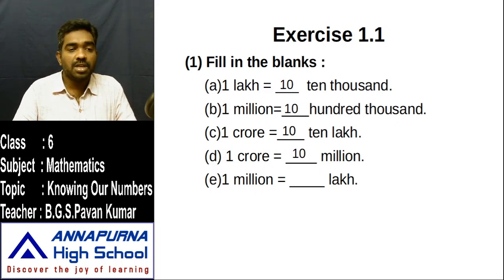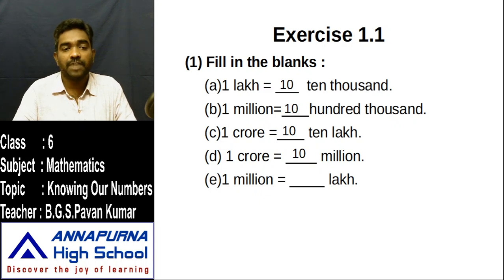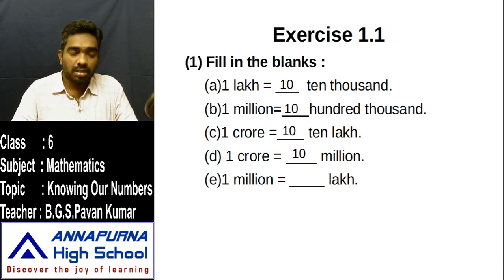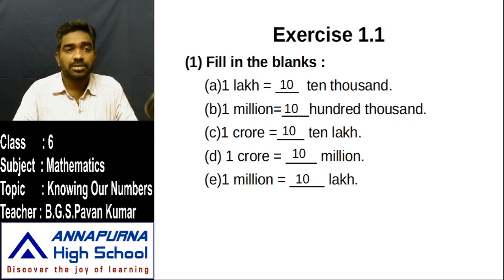Next one: one million is equal to how many lakhs? In one million, how many zeros are there? Six zeros. In one lakh, how many zeros? Five zeros. The difference is one zero. Put one before — the answer is ten. So one million is equal to ten lakh.